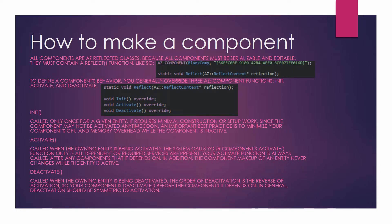To define a component's behaviour, you generally override three AZ::Component functions: init, activate, and deactivate. We declare void Init() override; void Activate() override; and void Deactivate() override. Init is called only once for a given entity and requires minimal construction or setup work. Since the component may not be activated any time soon, an important best practice is to minimize your component's CPU and memory overhead while the component is inactive.